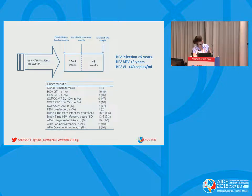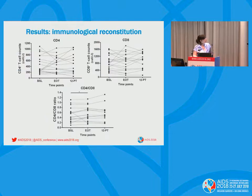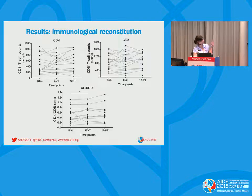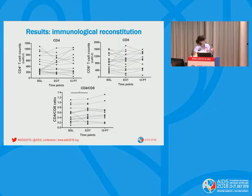We took samples before initiation of the DAA treatment, at the end of treatment, and 12 months after stopping treatment. At baseline, the median CD4 count was around 300. We did not find any statistically significant difference in median CD4 count at end of treatment or 12 months post-treatment, nor in CD8 cells. However, there was a higher CD4/CD8 ratio at end of treatment compared with baseline, though this difference was not maintained at the one-year sample.